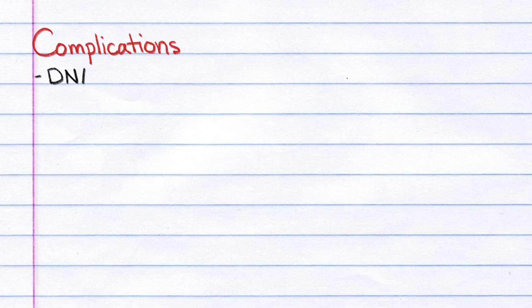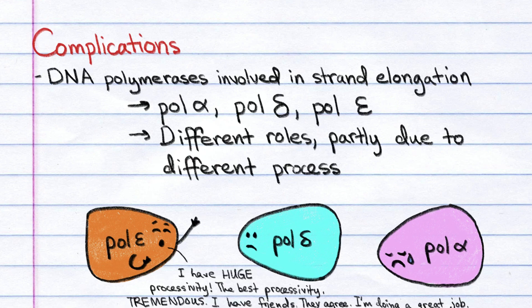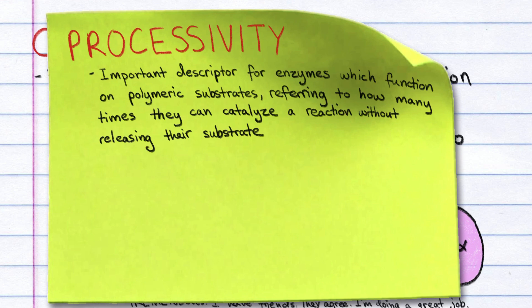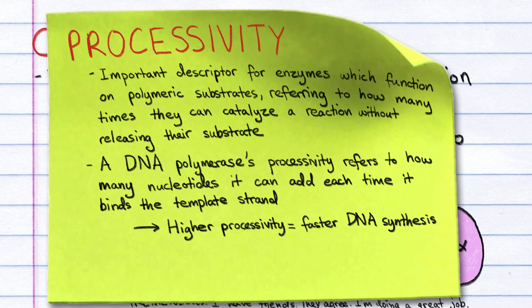Now let's discuss some complications. As mentioned, three DNA polymerases are involved in strand elongation: pol-alpha, pol-delta, and pol-epsilon. These polymerases play different roles, in part because they have different processivity. Processivity is an important descriptor for enzymes which function on polymeric substrates, referring to how many times they can catalyze a reaction without releasing their substrate. A DNA polymerase's processivity refers to how many nucleotides it can add each time it binds the template strand. So, higher processivity means faster DNA synthesis.